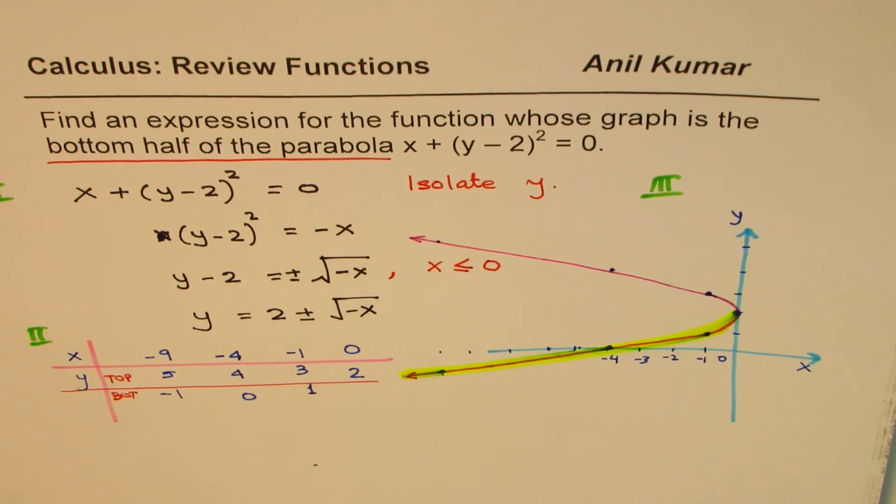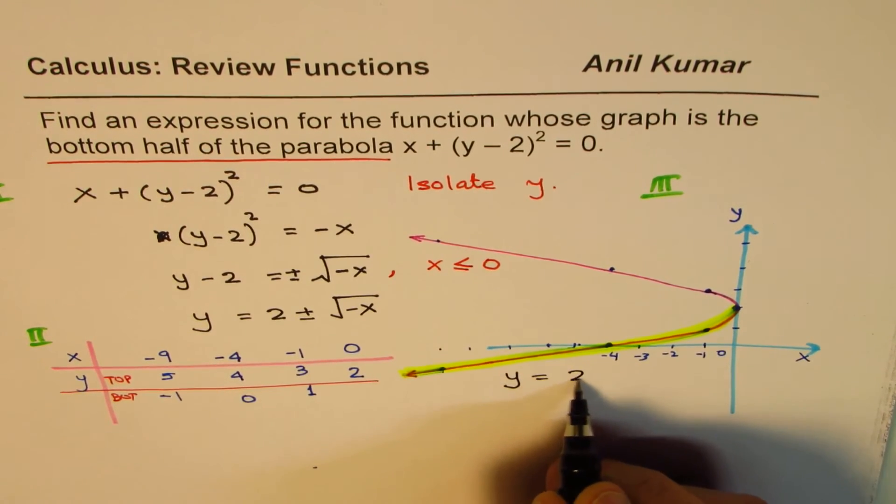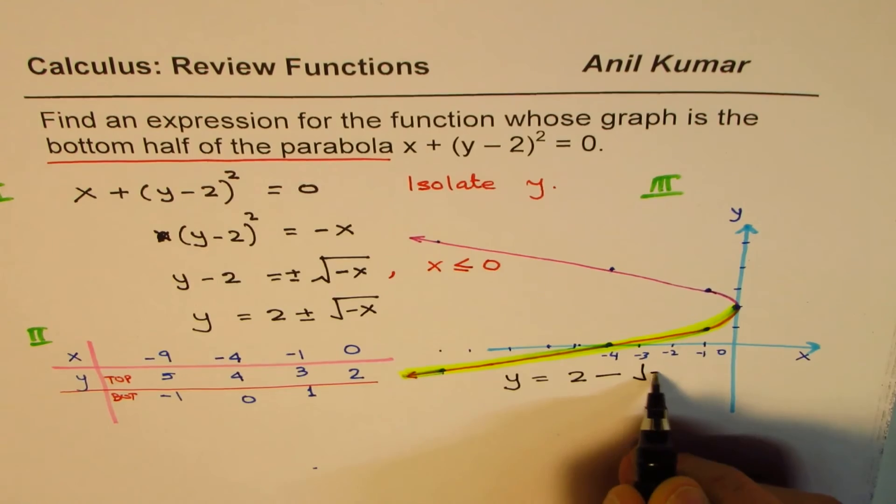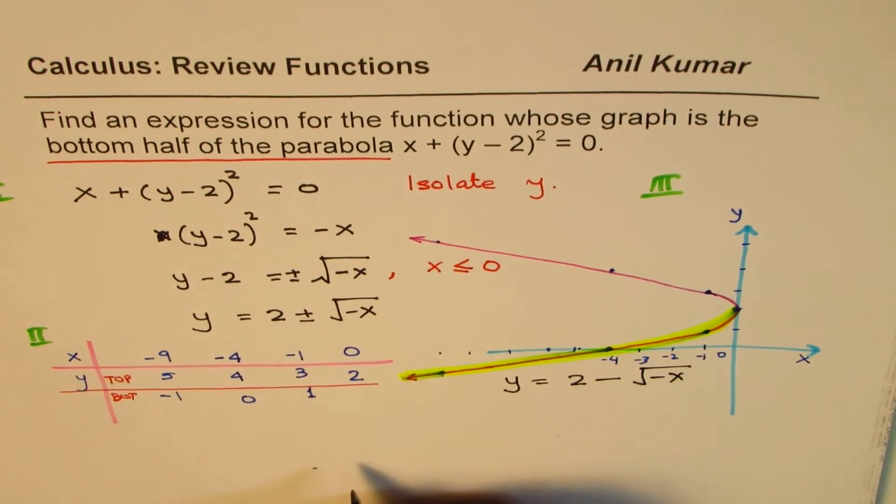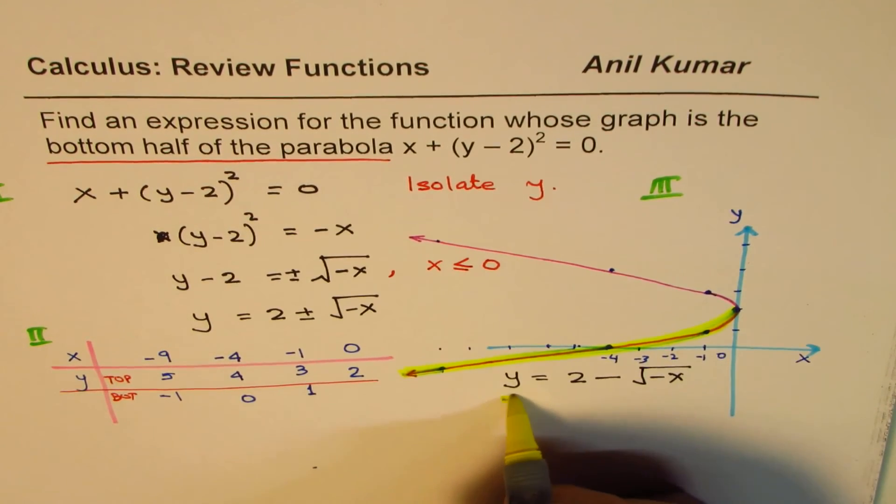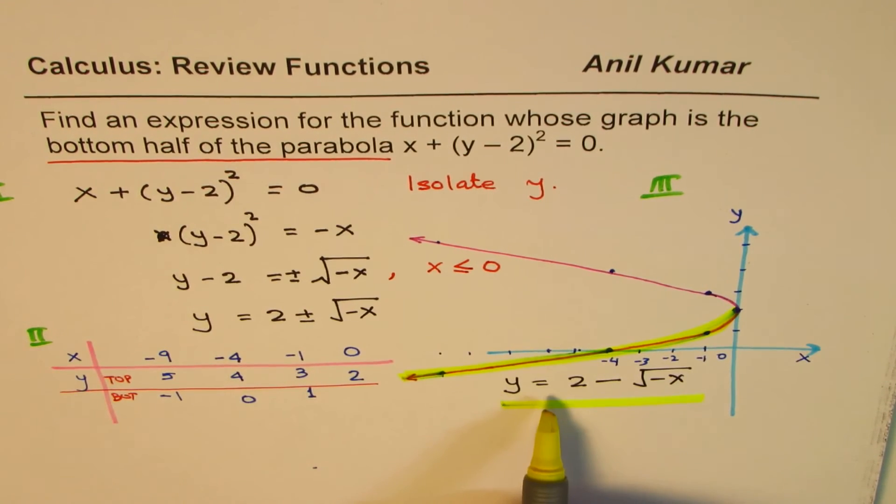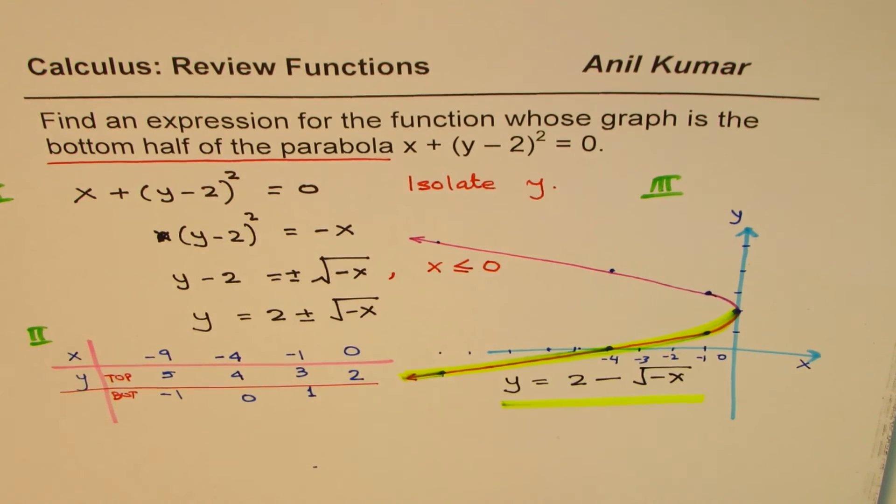You get these values when, in the function, you write this as y = 2 - √(-x). Do you get the point? So that becomes the solution of this question. The expression which represents the bottom half of this parabola is y = 2 - √(-x).